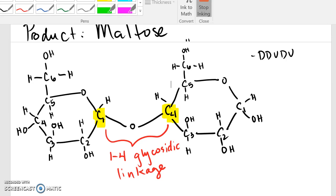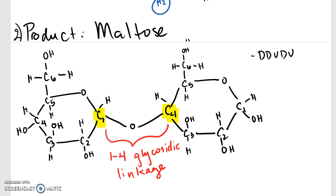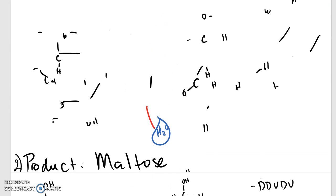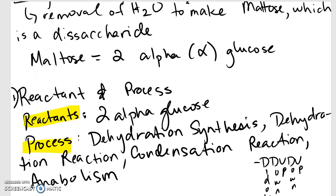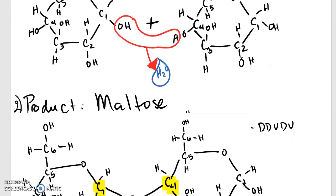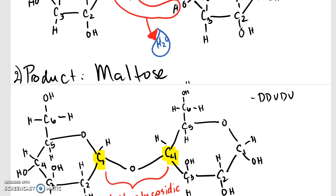And that right there is a dehydration synthesis of maltose, in a two-part drawing where the product is the second part of your drawing. So as a quick review: you've got the first part with the reactants and process side, and then the second part is products. It's always going to be like this anytime and every time that you're doing dehydration or hydrolysis of some kind of molecule.